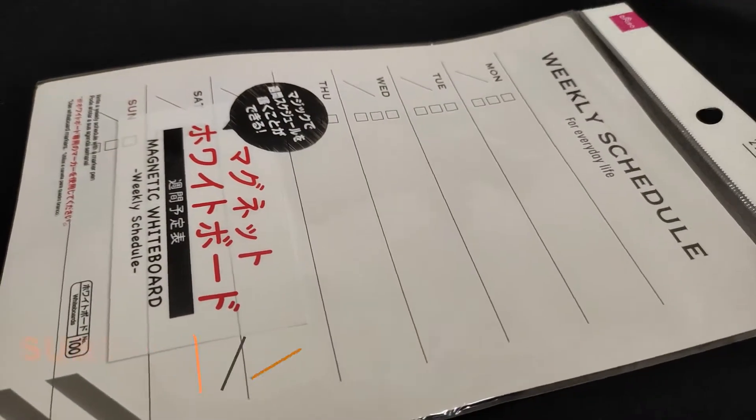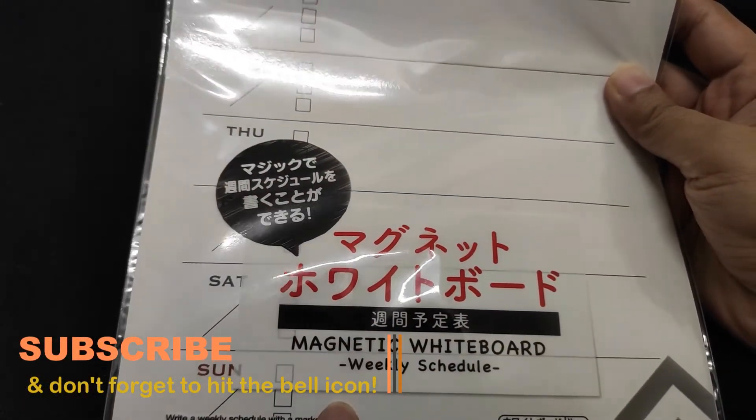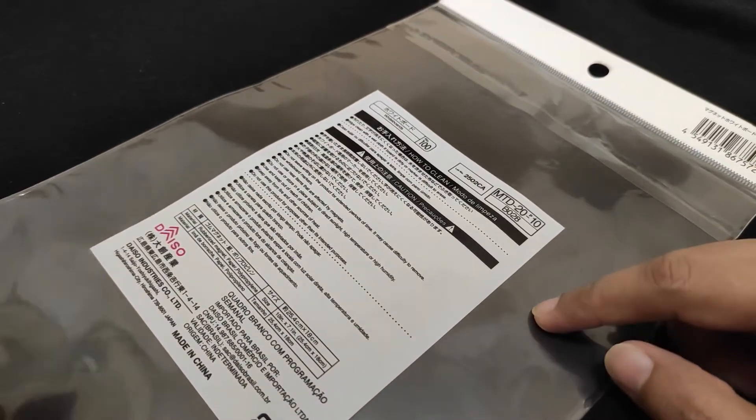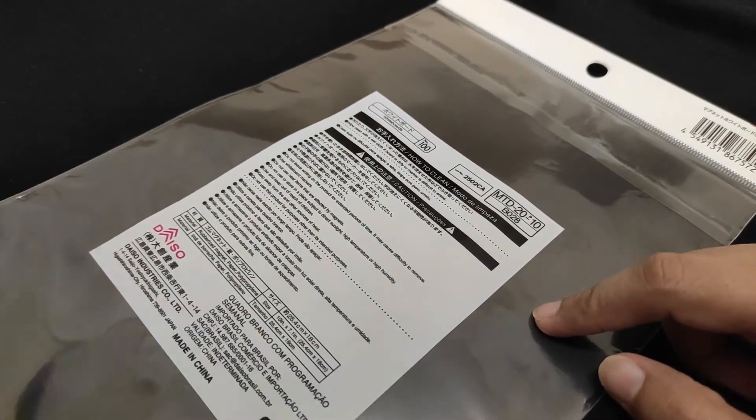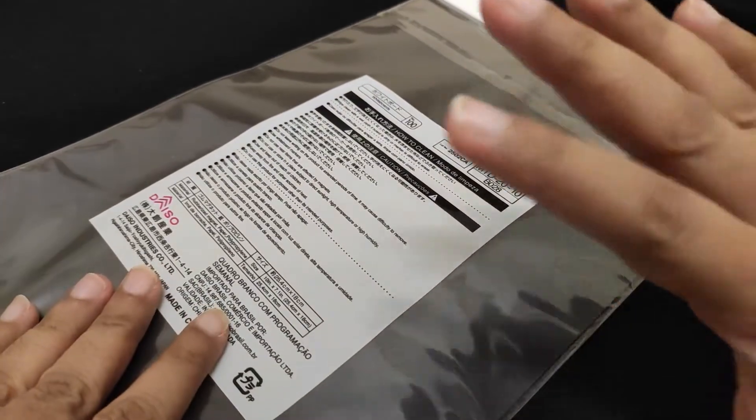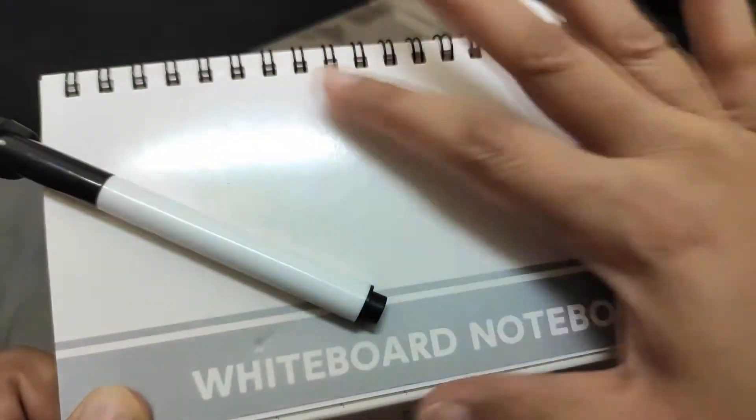The next thing is weekly schedule. This one is actually magnetic whiteboard kind of thing. This one was also bought from Living Plaza. So actually I wanted to decide between this and the board notebook but I ended up buying these two because I wanted to use this one to write my highlights or something and this one by weekly schedule.